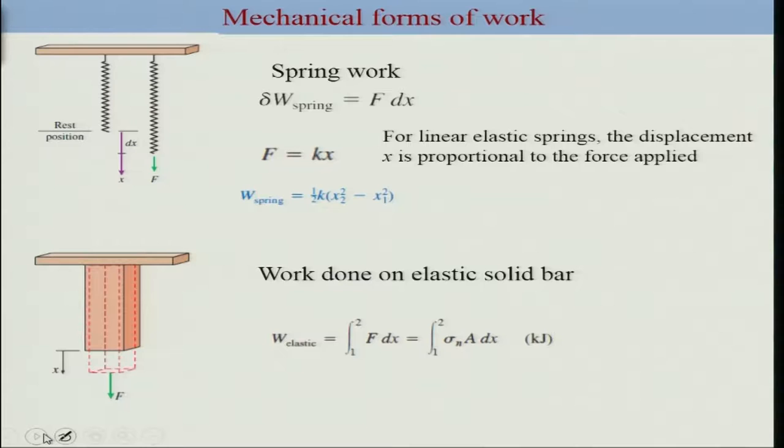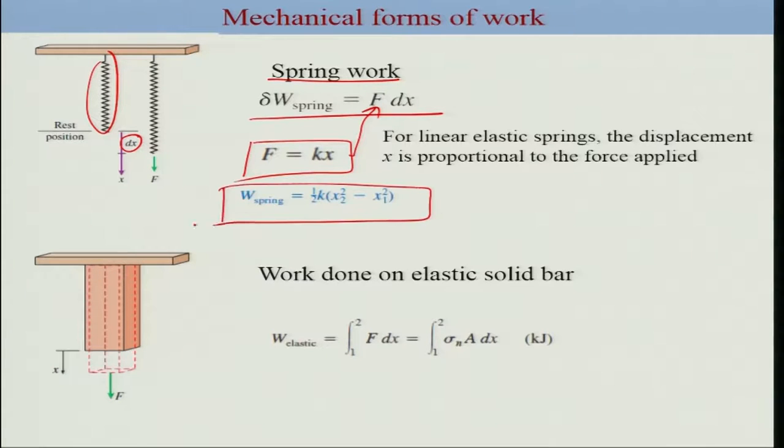Other forms of mechanical work include spring work. For example, when the spring is resting and you apply a force, the displacement caused can be given as dx. The work would be given by multiplying f and the displacement. For a linear elastic spring, we know this force is proportional to the displacement, hence f equals kx can be replaced here. You can integrate it to get the work of spring for two positions x1 and x2.